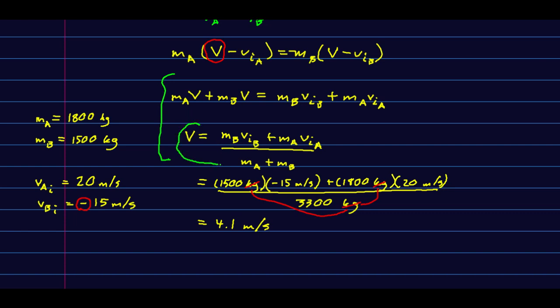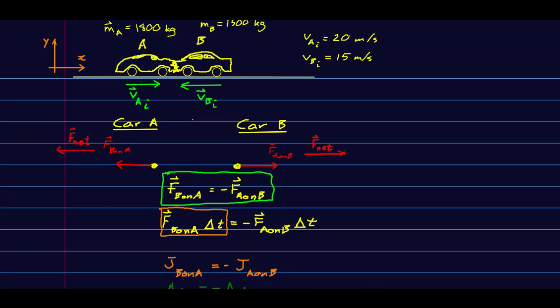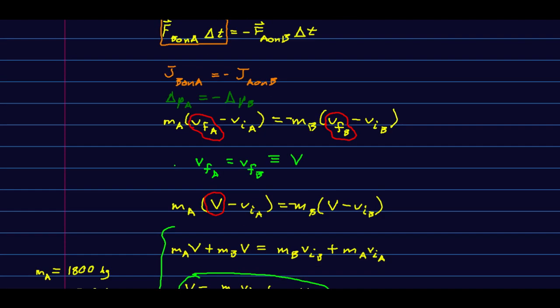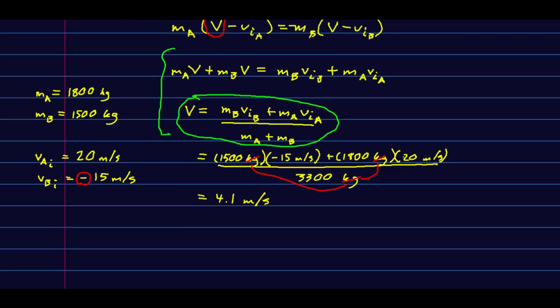So I've taken a moment to solve that. Here is my solution, and hopefully you've come up with an expression more or less like this. If not, check your algebra. I brought down the quantities that we need to deal with. Notice that we had defined right as positive, so vB became negative 15 meters per second. I've now just plugged those in, and note that the kilograms are on top and bottom so they cancel. We get an answer in meters per second, which we had better because this is a velocity. We find that after the collision, the two cars are stuck together and traveling to the right at about 4.1 meters per second.